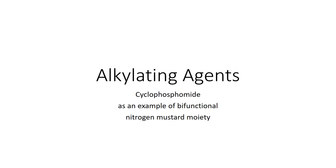A little interesting backstory: the nitrogen mustard alkylating agents were discovered as a treatment for non-Hodgkin's lymphoma. After World War One, when mustard gas — an alkylating agent — was used extensively in the war and lots of soldiers were exposed to it, two doctors from Yale discovered that it caused a decrease in lymphocytes, and that it has a specificity and attraction to B cells particularly.